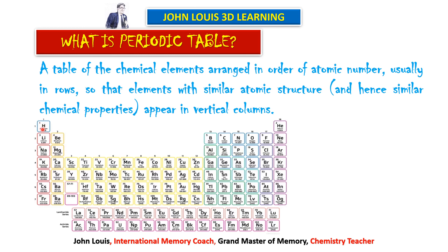When elements are arranged like this, the elements placed one below the other are found to have similar properties. So each group will have similar properties. If you learn the properties of lithium, you can easily predict the properties of all the other elements placed below it in the same group. We need not study separately for all these elements.